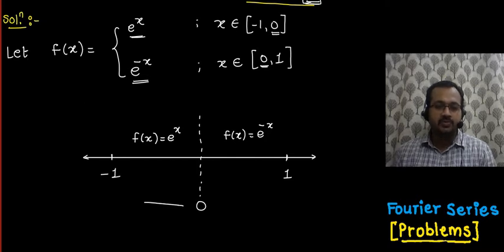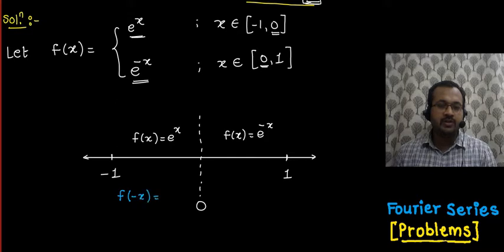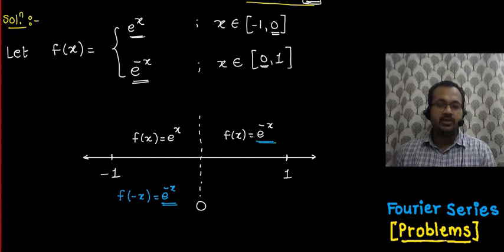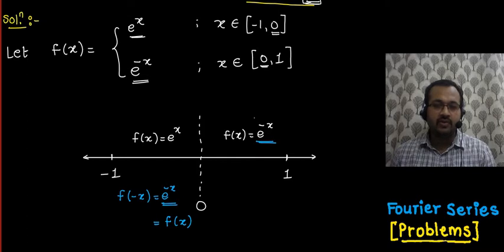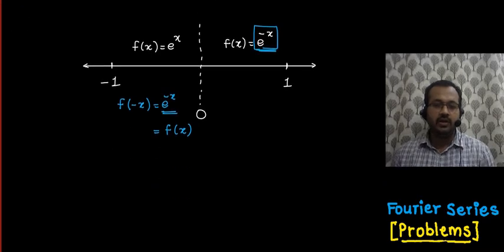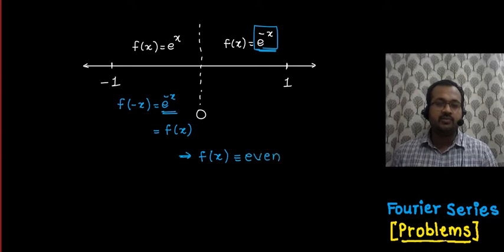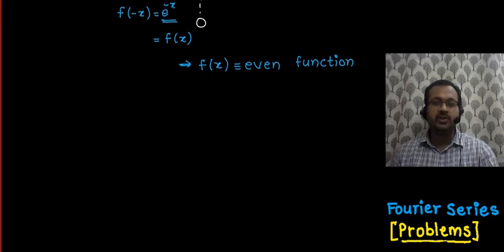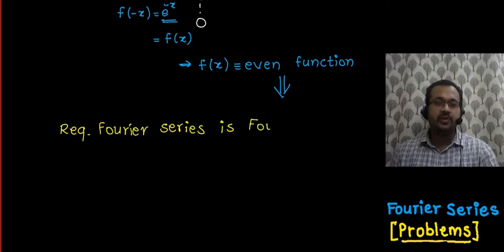In the range minus 1 to 0, the function definition is e raised to x, and here x is negative. So we replace x by minus x. If we replace x by minus x, the function looks like e raised to minus x, which equals f(x). Therefore, the given function f(x) is an even function in the range minus 1 to 1, and the required Fourier series will be a Fourier cosine series.